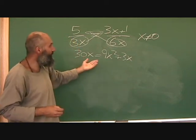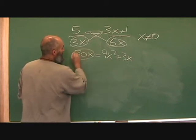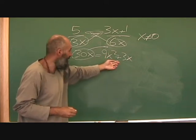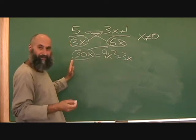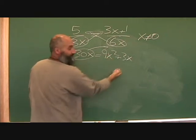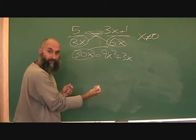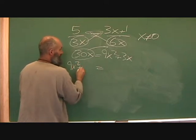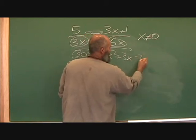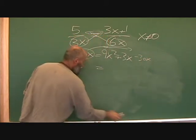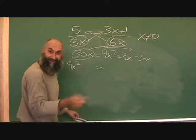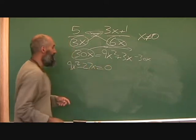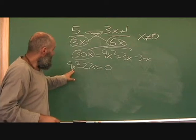Now we want to bring all the x's to one side. I'm going to move 30x to the other side because I want to keep my x-squared term positive — I prefer keeping the first term positive. So lining up the equal sign, when 30x comes over it becomes minus 30x, giving us 9x squared minus 27x equals zero.